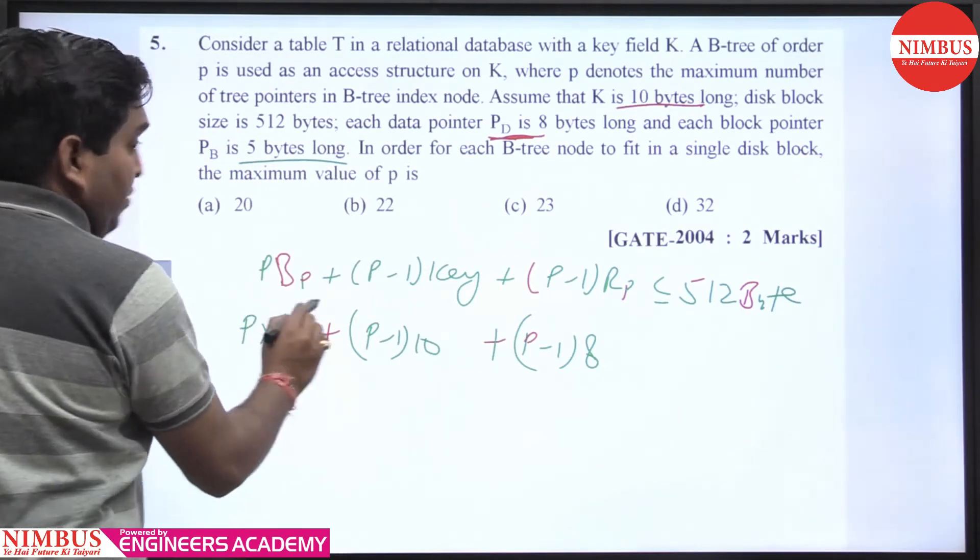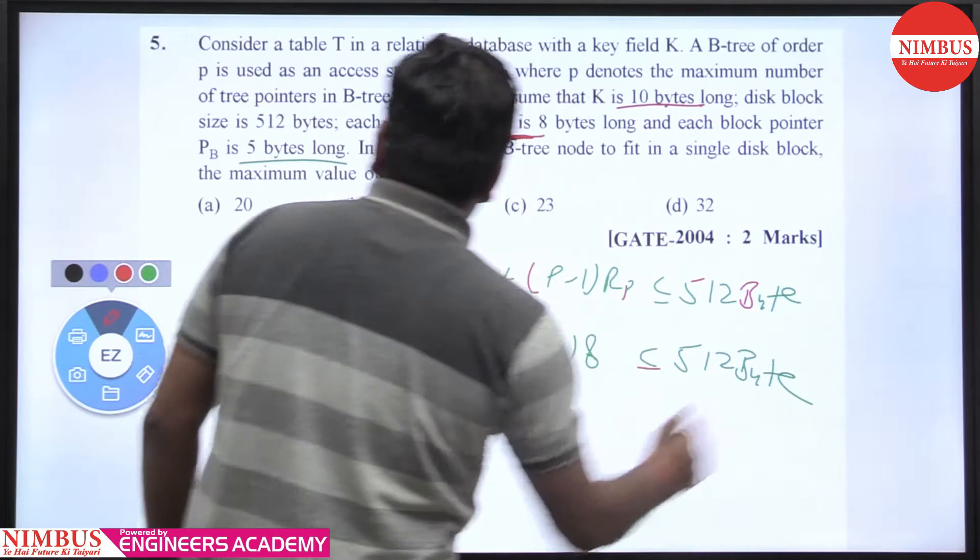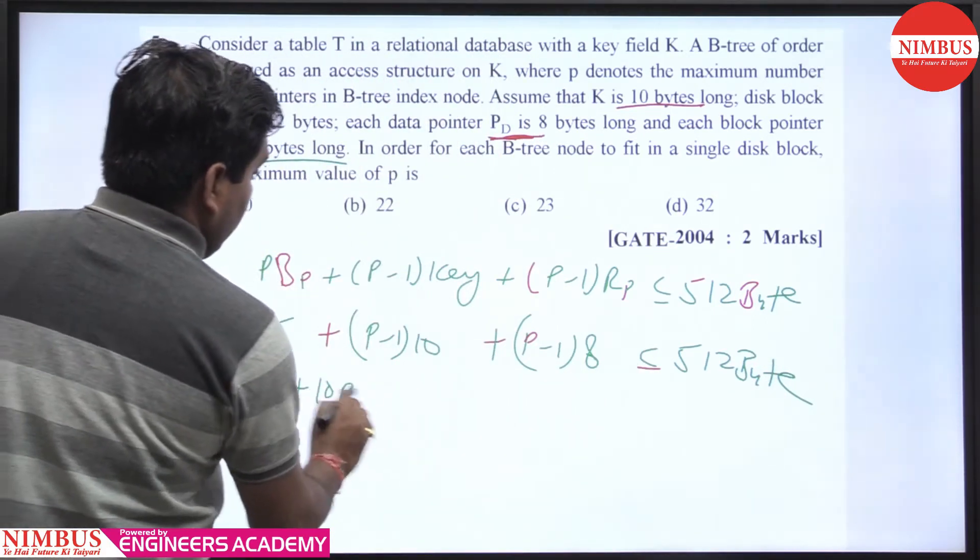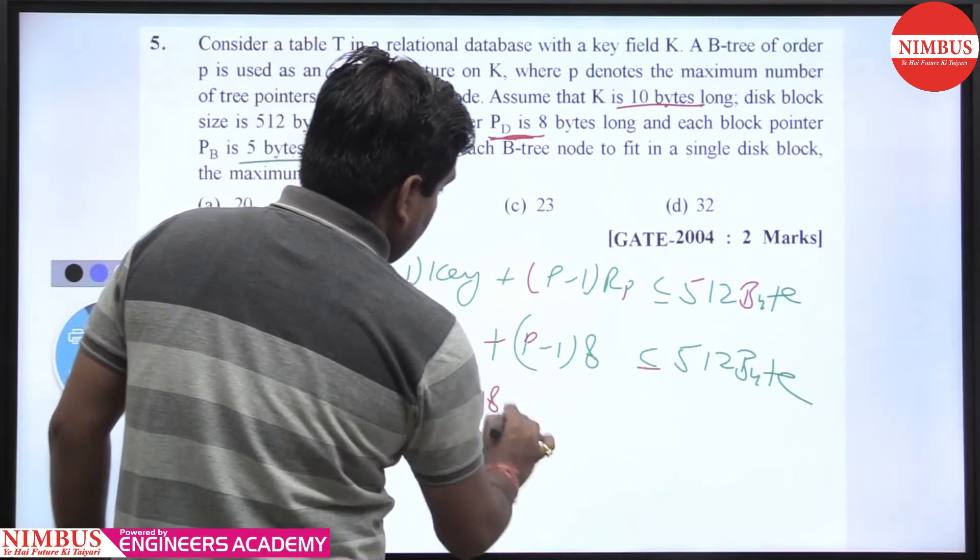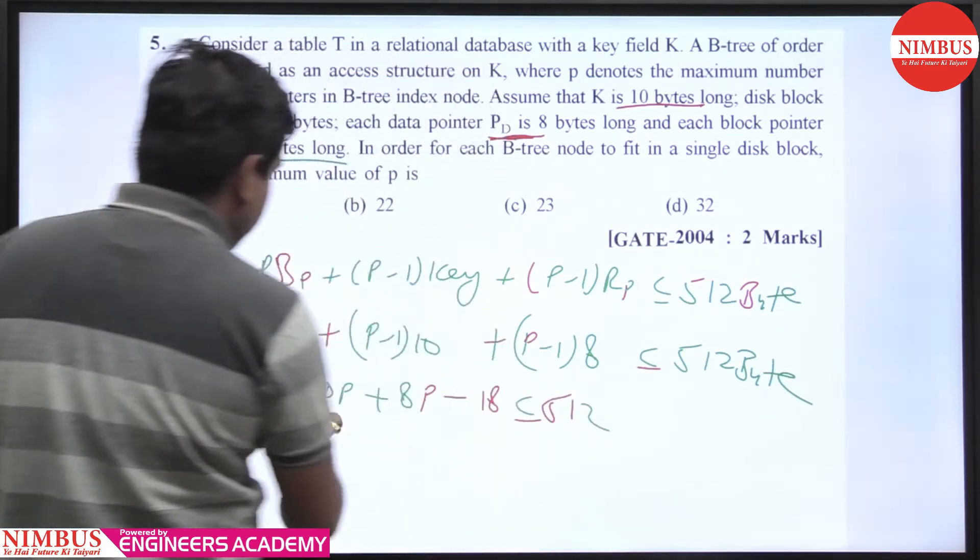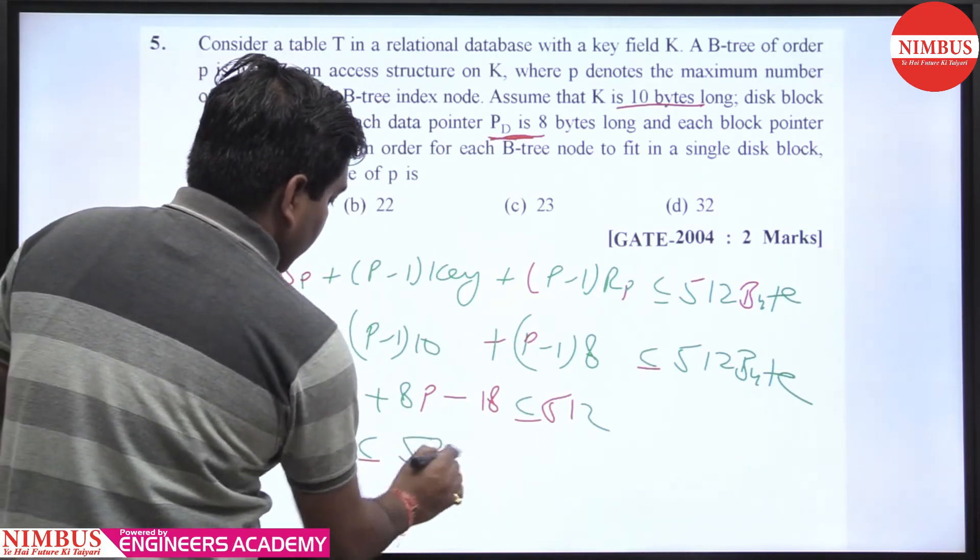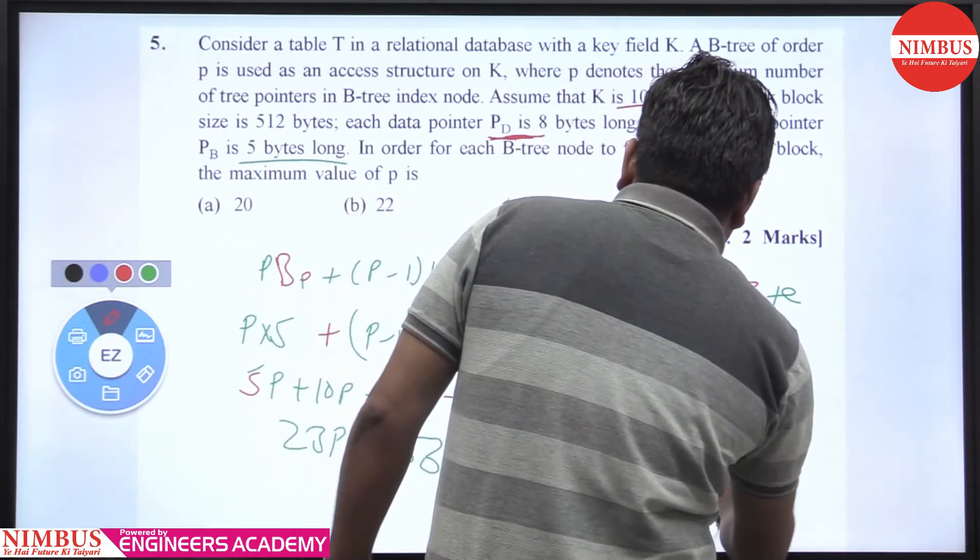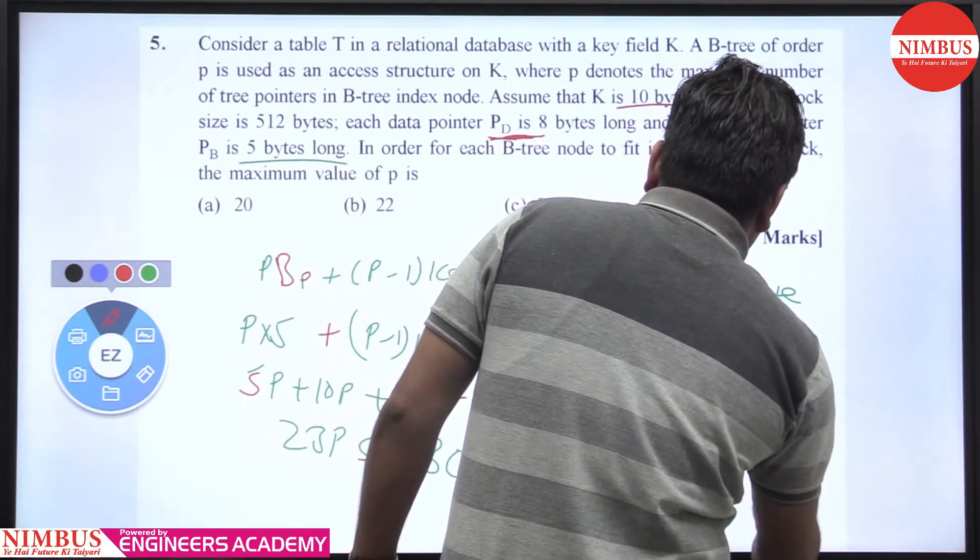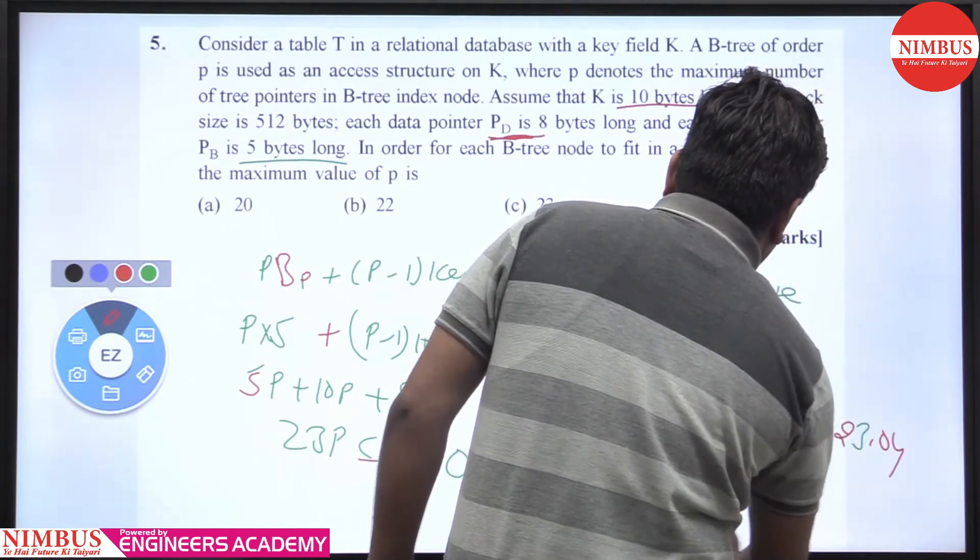So P times 5 less than equal to 512 bytes. So 5P plus 10P plus 8P minus 10 minus 8 minus 18, less than equal to 512. Then 23P less than equal to 530. Then what we are getting? P equal to 530 divided by 23, that we are getting 23.04, but we take the floor value.